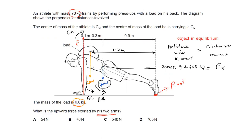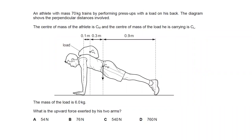The perpendicular distance from the pivot to the arms equals 0.1 + 0.3 + 0.9 = 1.3 meters. So the total anti-clockwise moment equals the total clockwise moment, which gives: 700 × 0.9 + 60 × 1.2 = F × 1.3.